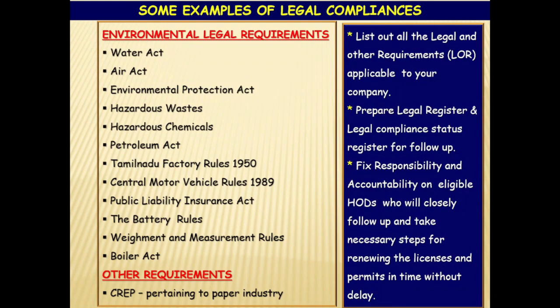Some examples of legal compliance pertaining to a paper manufacturing company: Water Act, Air Act, Environmental Protection Act, Hazardous Waste rules, Hazardous Chemicals rules, Petroleum Act, Tamil Nadu Factory Rules, Central Motor Vehicle Rules, Public Liability Insurance Act, Battery Rules, Weights and Measurement Rules, and Boiler Act. Other requirements include CREP — Corporate Responsibility for Environment Protection — which is applicable exclusively to the paper industry. Similarly, you must list out all the legal and other requirements applicable to your company. Prepare the legal register and legal compliance status register as shown in the subsequent slides. Fix responsibility and accountability on HODs for updating the department's legal compliance, licenses and permits as per legal requirements.